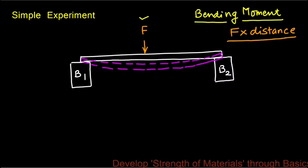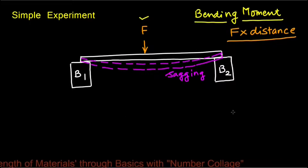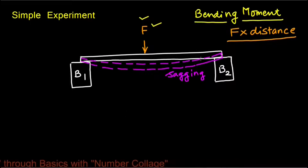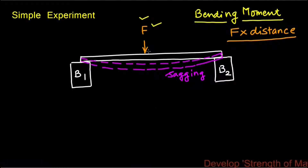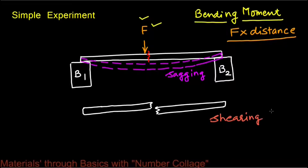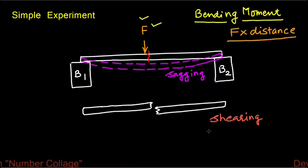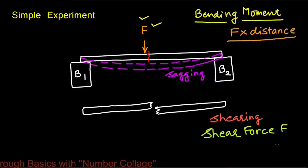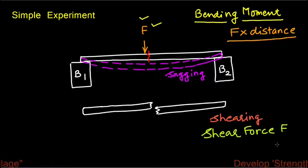This bending of the scale in the downward direction is known as sagging. If we further increase the force F, a stage will be reached when the scale will break into two pieces. This breaking or shearing of the wooden scale into two pieces is caused due to the shear force F. So bending moment tends to bend the object, whereas shear force tends to break the object at the point of application of force.